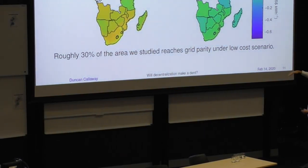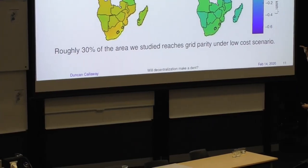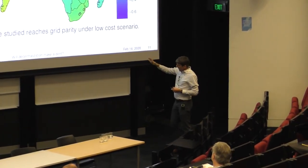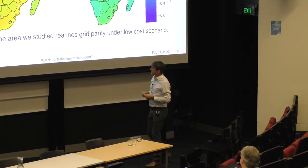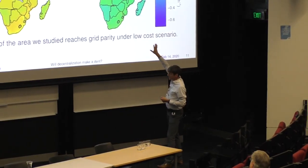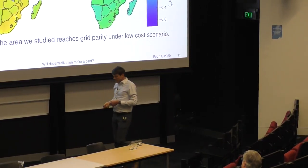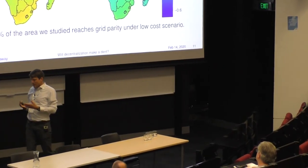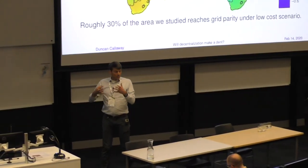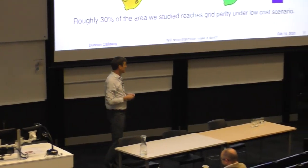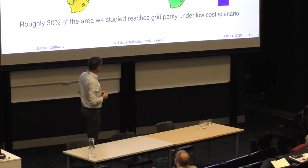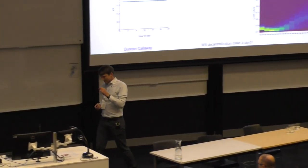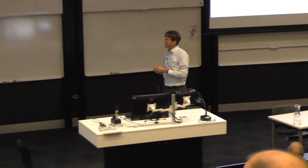If it's a deeper blue, the solar home system is actually cheaper. If it's more green or yellow, it's more expensive. By our estimates, roughly 30% of the area could reach grid parity under this low cost scenario, which begins to call into question whether we should be building more expensive networks to reach remote locations.